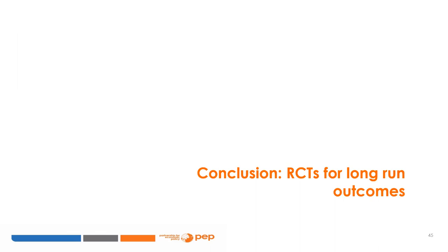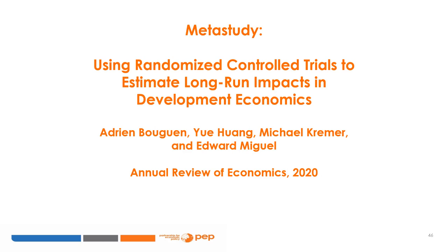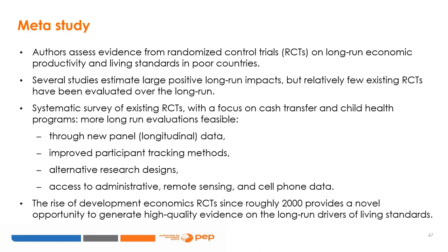In conclusion, what can we say about randomized controlled trials for long-run outcomes? There is a recent meta-study published in the Annual Review of Economics by Bouguin, Hwang, Kremer, and Miguel — called 'Using Randomized Controlled Trials to Estimate Long-Run Impacts in Development Economics' — which assessed the evidence from RCTs on long-run economic opportunities and living standards in poor countries. They find that several studies estimate large positive long-run impacts, but relatively few existing RCTs have been evaluated over the long run.